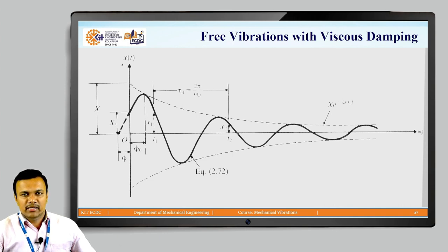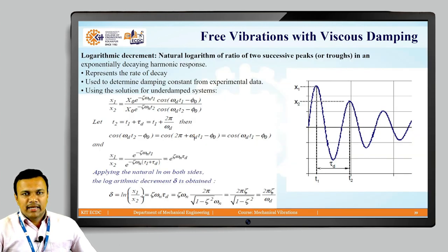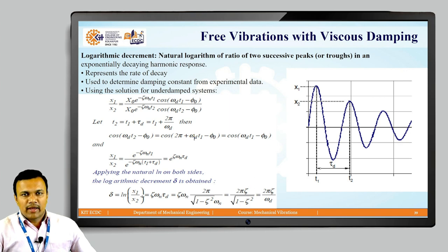For the vibratory system with viscous damping, the vibration amplitude decays exponentially. The logarithmic decrement is the natural logarithm of the ratio of two successive peaks — this is used to quantify the rate of decay, from which we can determine the damping constant.